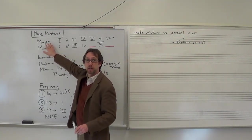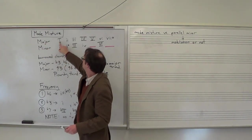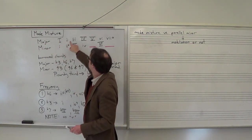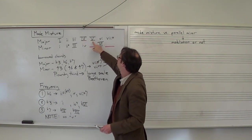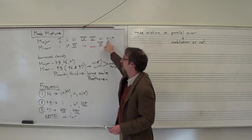So let's dig in and see exactly what's going on here. In a major key, we expect our one chord to be major, two is minor, three is minor, four is major, five is major, six is minor, and seven is diminished.